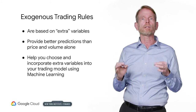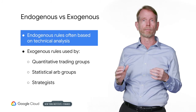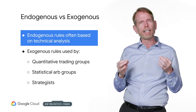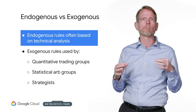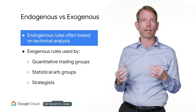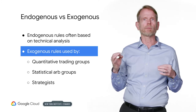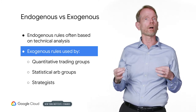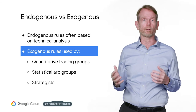This is where machine learning helps tremendously. In the industry, we see that endogenous rules tend to come from technical analysis. We have different names for groups that tend to make exogenous rules — these are quantitative trading groups, statistical arbitrage groups, or simply strategists.